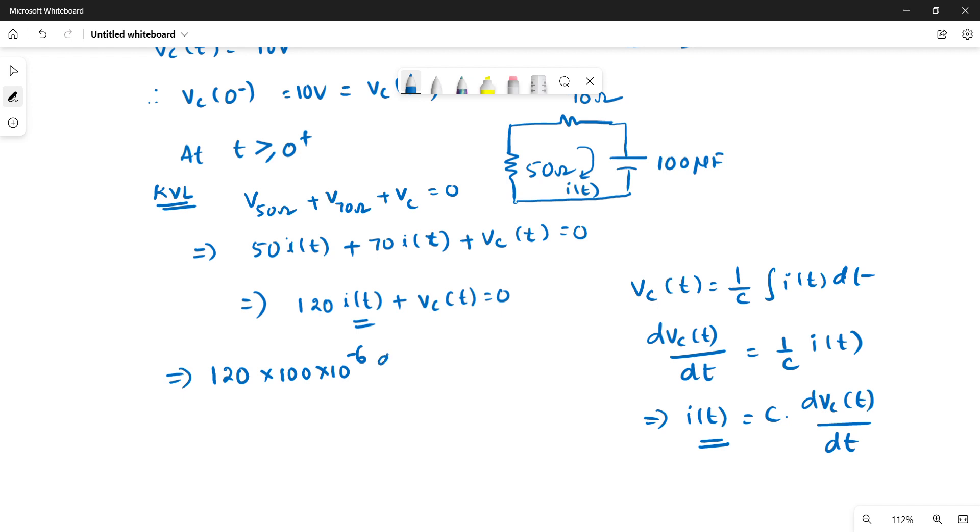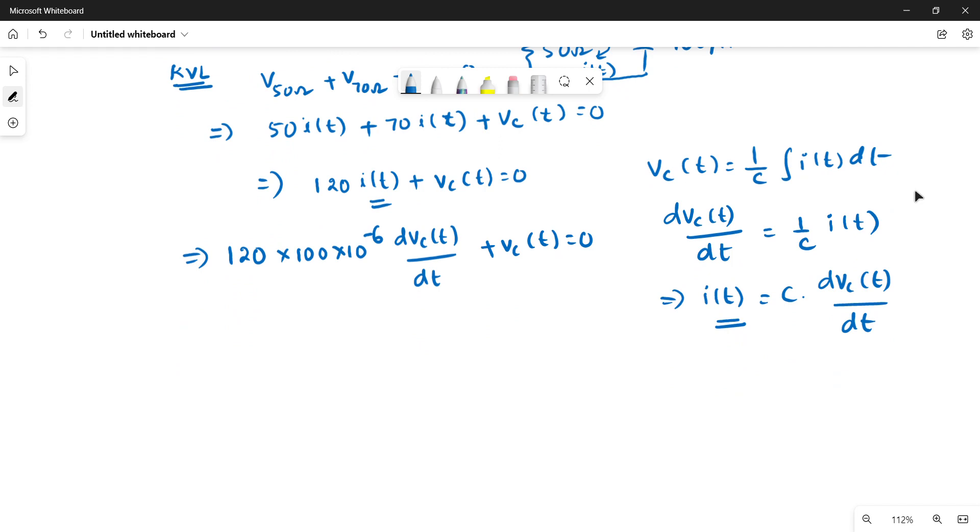So from this we get current i of t as c into dVc of t by dt. We substitute this current expression in the earlier equation. So 120 times c, which is 100 microfarad, so 100 into 10 power minus 6, times dVc of t by dt plus Vc of t equal to zero.